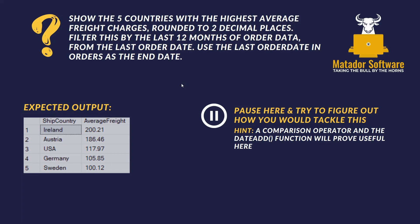Question three: show the top five countries with the highest average freight charges, rounded to two decimal places. Filter this by the last 12 months of order data from the last order date — that's important. Use the last order date in Orders as the end date. You can see expected output and some hints: you want a comparison operator such as greater than or equal to, and the DATEADD function will prove useful. Key segments: top five countries, highest average freight charges, rounded to two decimal places, filter by the last 12 months.